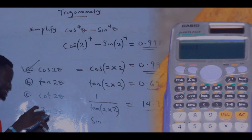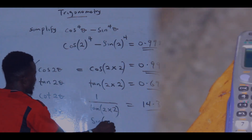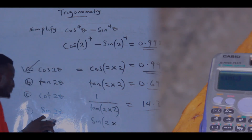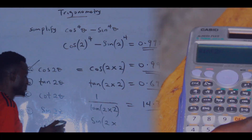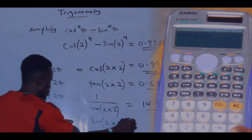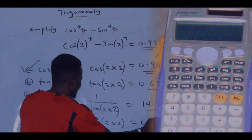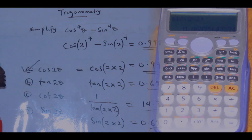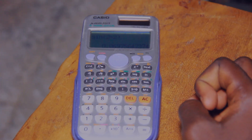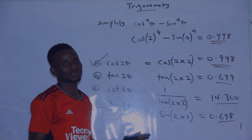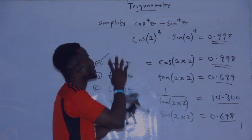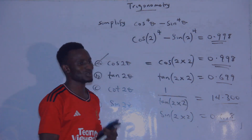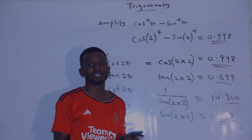Press AC and go for the last option. Press sin — it will open the bracket. Press two multiplied by the value of theta, which is two, close the bracket, press equals. You observe that this value is 0.698, which is not the same. So the option equal to the question is option A — that is the correct answer.